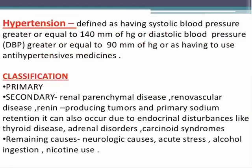Hypertension is classified into two types: primary and secondary. In secondary hypertension, the etiology lies in a different organ, such as renal parenchymal disease, renovascular disease, renin-producing tumors, and primary sodium retention due to endocrine disturbances like thyroid disease, adrenal disorders, and carcinoid syndromes. The remaining causes of secondary hypertension include neurological causes, acute stress, alcohol ingestion, and nicotine use.